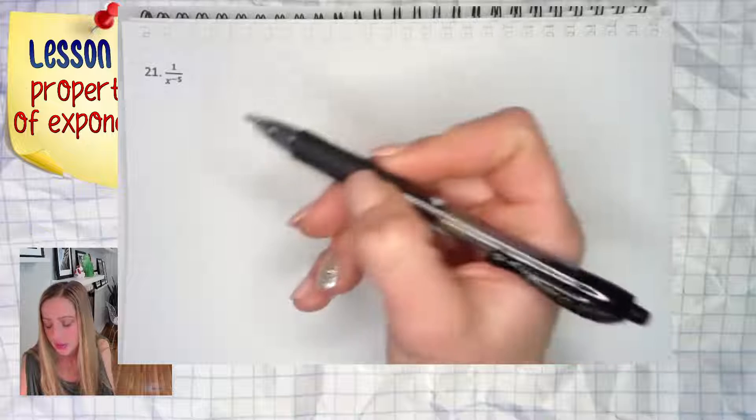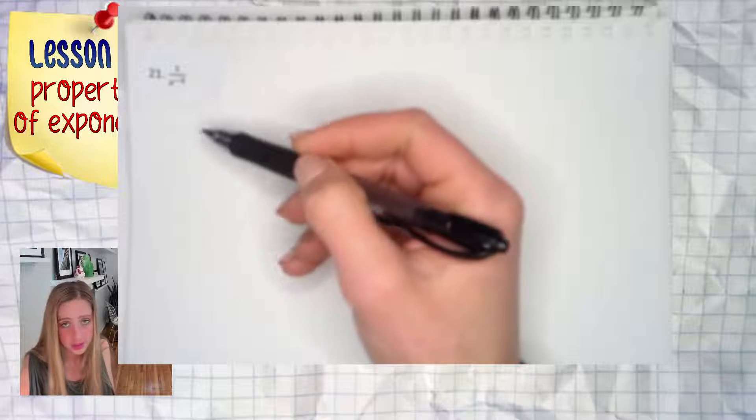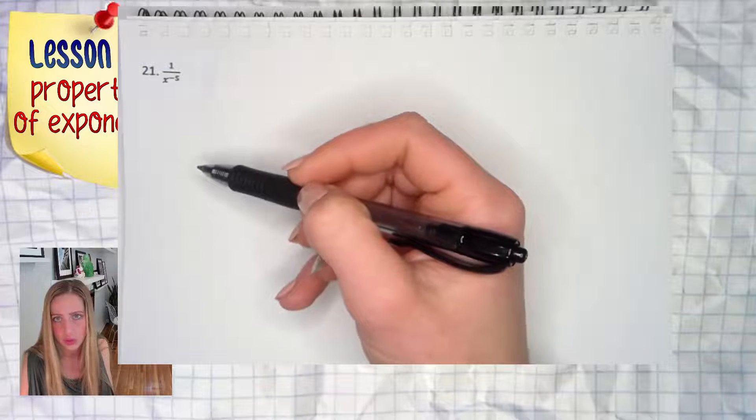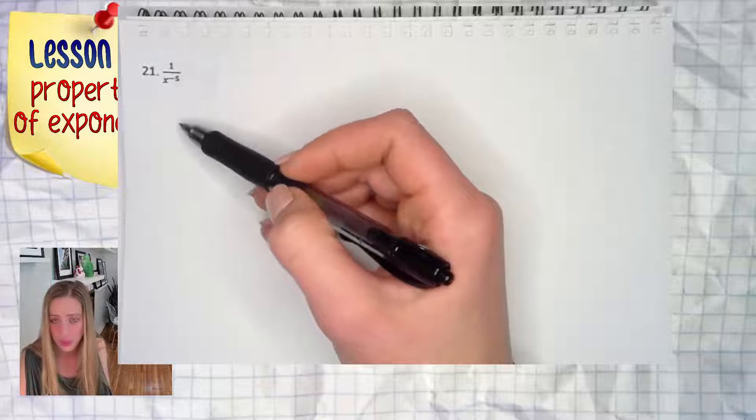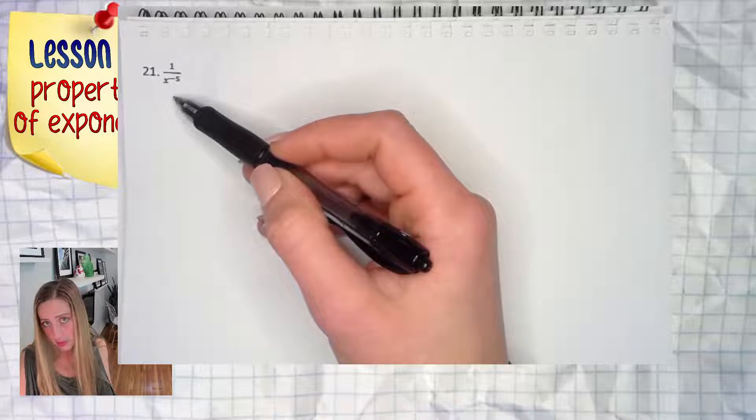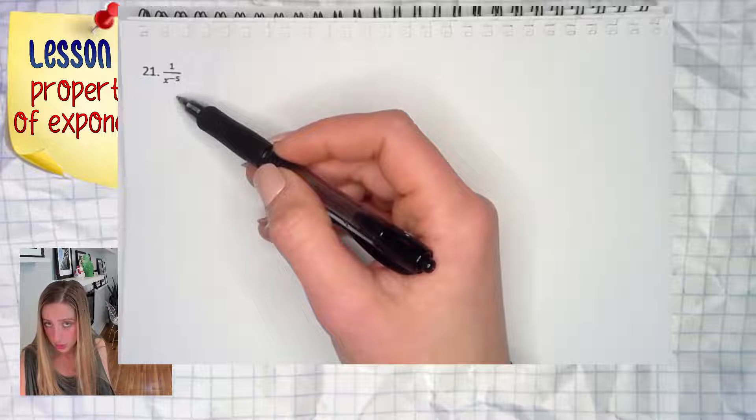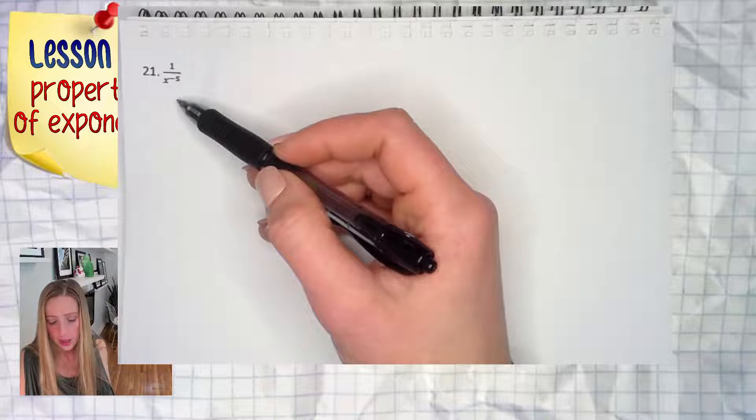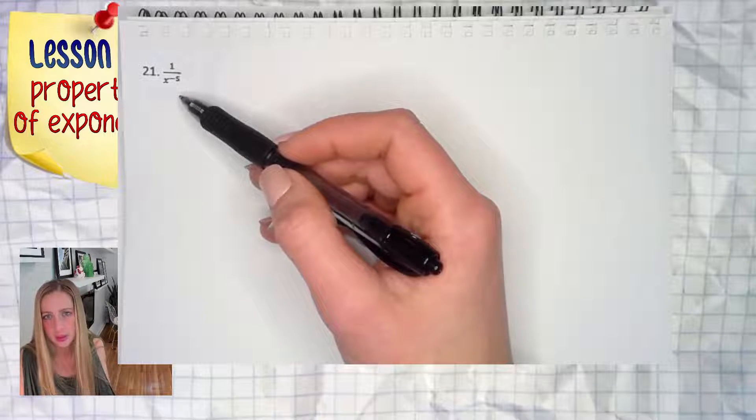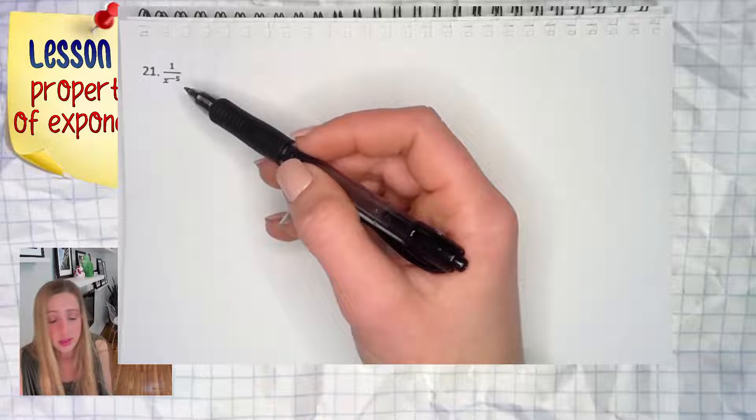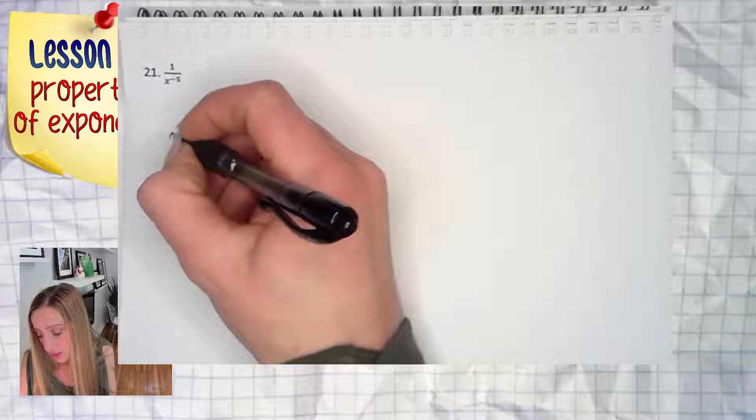If you are checking this example, I advise you to also look at number 22, because that one is quite similar except instead of an x we have a numerical value of 2. The exponent is also different, but I want to make sure you're handling that correctly. The final answer to this example should just be x to the positive 5.